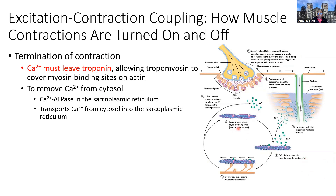In order to terminate the contraction, calcium must leave troponin — in other words, it must leave the sarcoplasm altogether. Calcium ATPase pumps present on the SR membrane pump that calcium back into the SR, stopping it from binding to troponin and ceasing that muscle contraction.